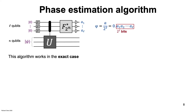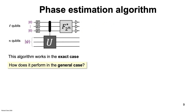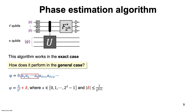Now, what happens if we use the same algorithm for the general case, where phi can be any real number between zero and one? Recall that in that case, we need to determine the l-bit binary number that best approximates the true value of phi. We can write phi as an l-bit binary fraction plus a quantity delta, where delta represents the remaining bits that get rounded up or down. If phi gets rounded down, then delta is positive; if phi gets rounded up, then delta is negative. The absolute value of delta is small — it's at most 1 over 2 to the l plus 1.